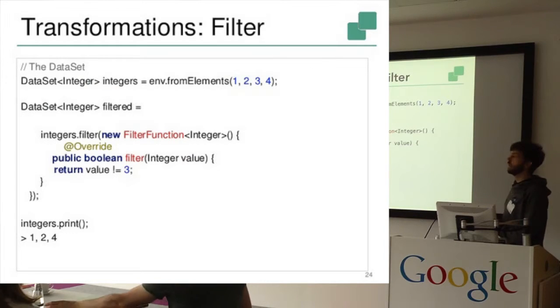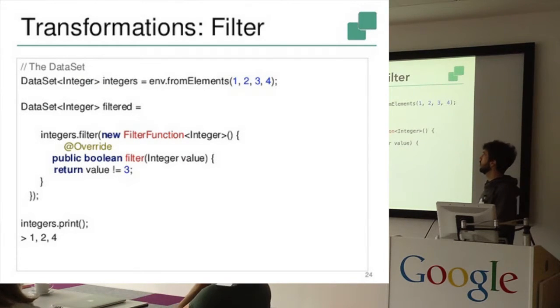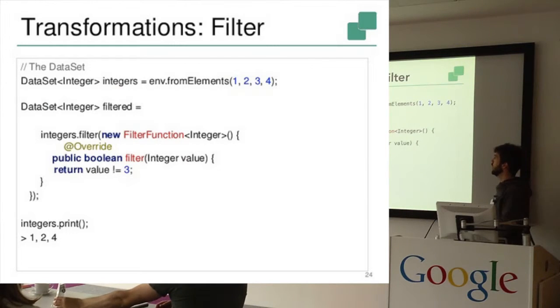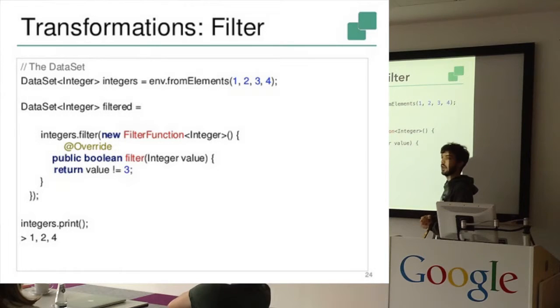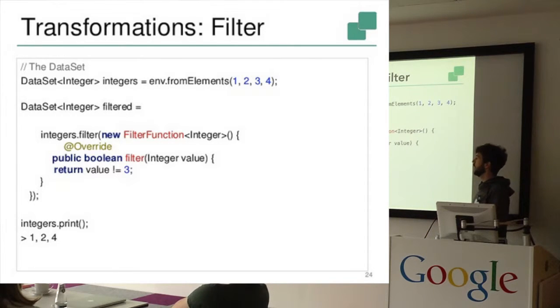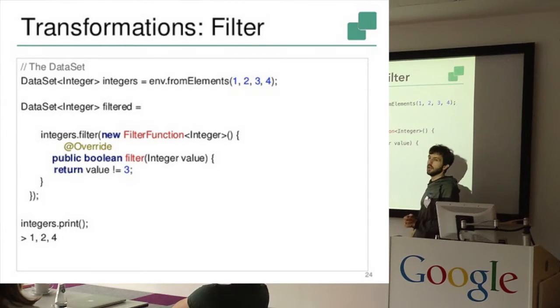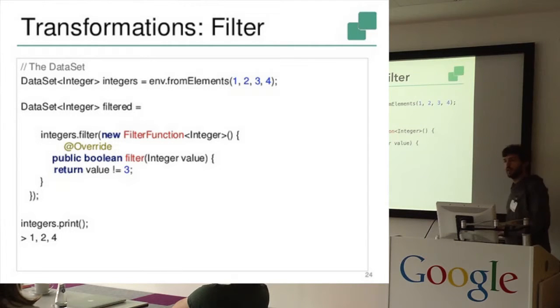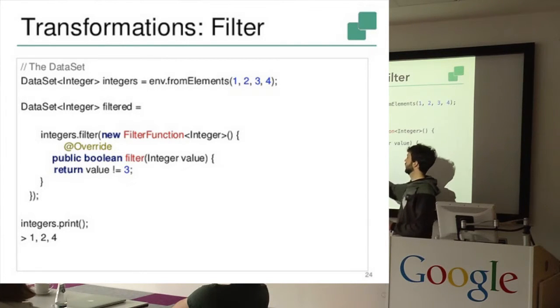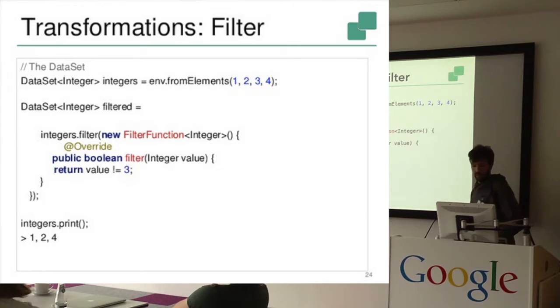Then there's the filter function which lets you apply a filter on a data set. For example here we again have the integer data set, and we filter out all elements which are not, which are equal to three. So yeah, if this returns a true, then actually the value is kept, and otherwise not. So here we just filter out the three.